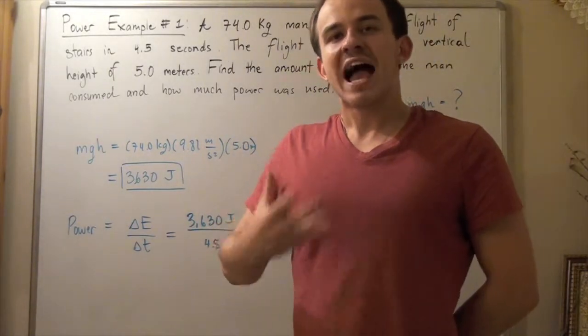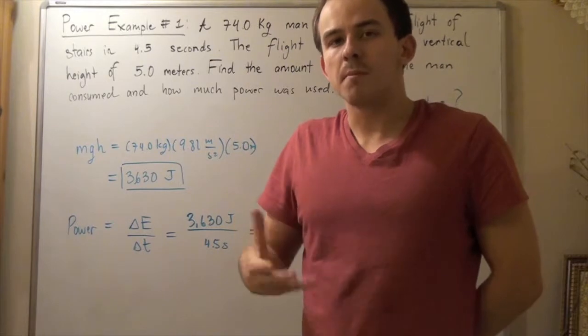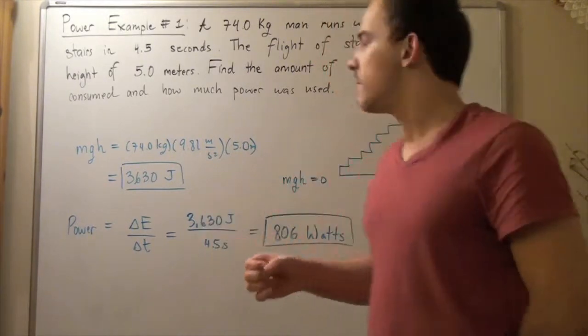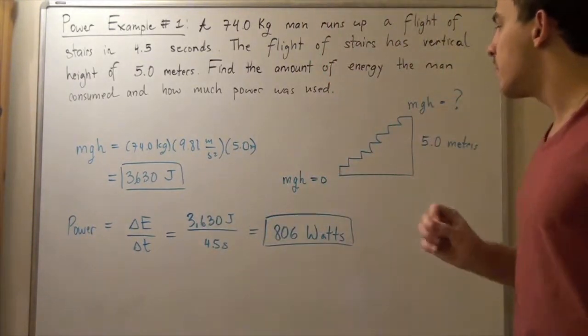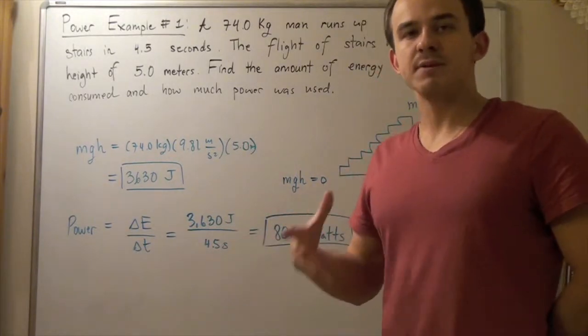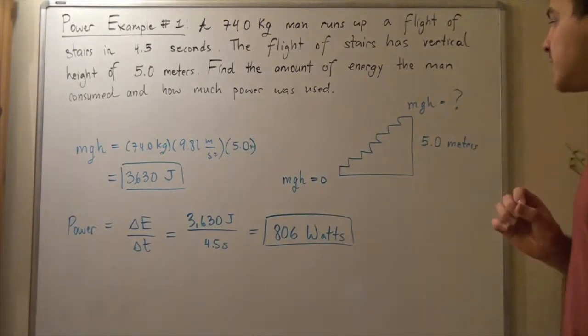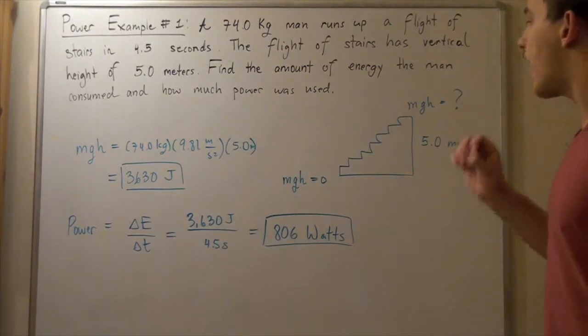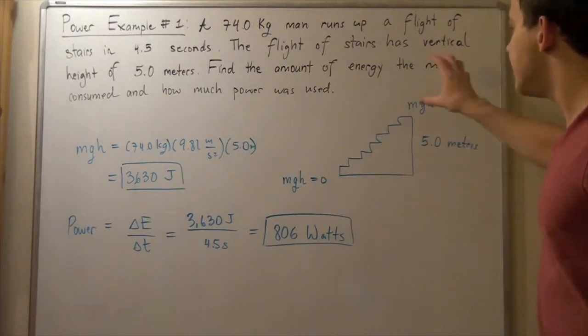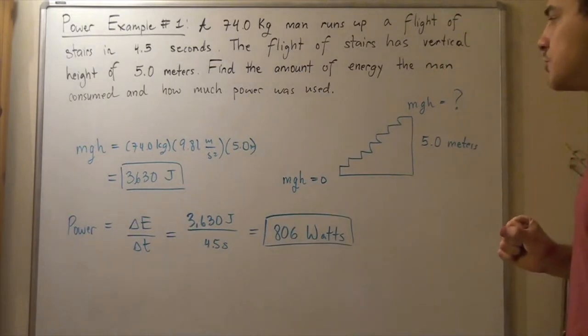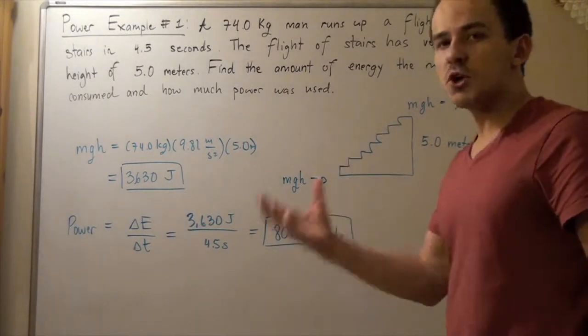This will give us how much energy was used up by the man to run up all the stairs. Remember, that energy is conserved. That means energy must go into somewhere and we're going to estimate or approximate that all the energy goes into the gravitational potential energy and none goes into thermal energy.